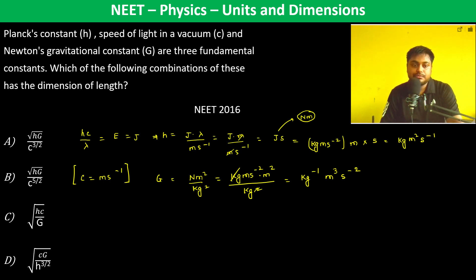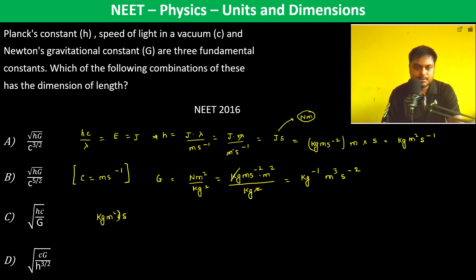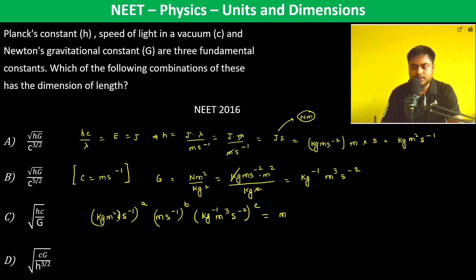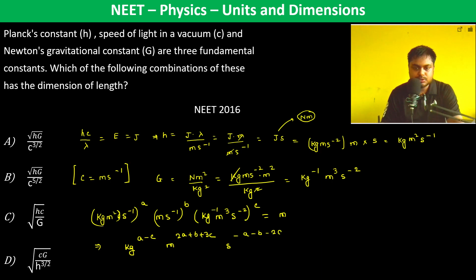Now which of the following combinations has the dimension of length? So we set up: (kg·m²·s⁻¹)^a times (m·s⁻¹)^b times (kg⁻¹·m³·s⁻²)^c equals meter. This gives: kg^(a−c), meter^(2a+b+3c), and s^(−a−b−2c) equals meter.